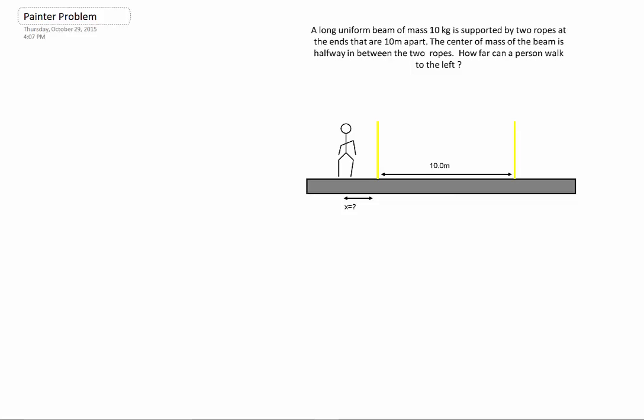So this was a problem we talked about in class. It's a long uniform beam of mass 10 kilograms, supported by two ropes that are 10 meters apart. The center of the mass beam is halfway through two ropes.